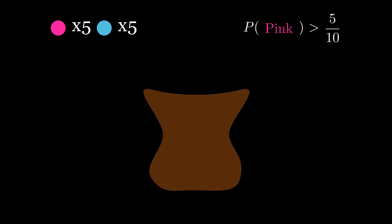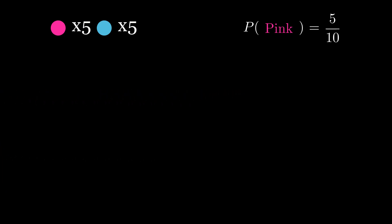But if you shuffled the bag first the probability sinks back to five in ten. Or maybe you decided to not pick a ball at all in which case the probability is now zero in ten.